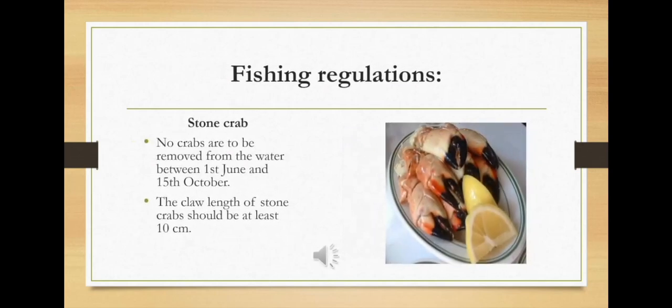Fishing regulations regarding stone crab state that no crabs are to be removed from the water between the 1st of June and the 15th of October. Also, the claw length of stone crab should be at least 10 cm.